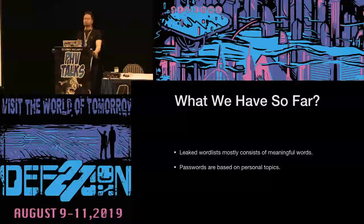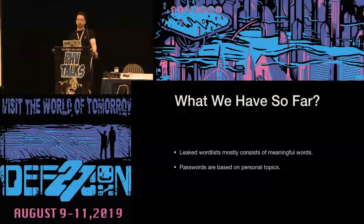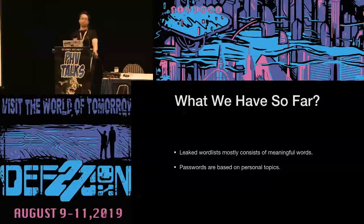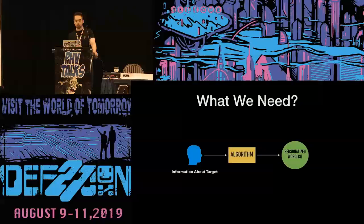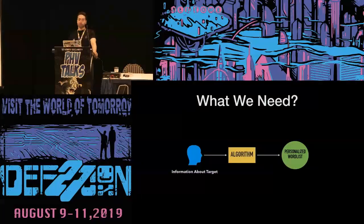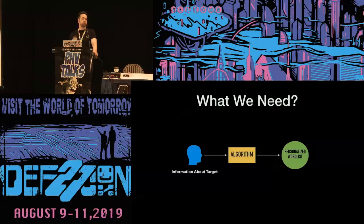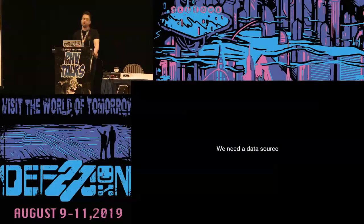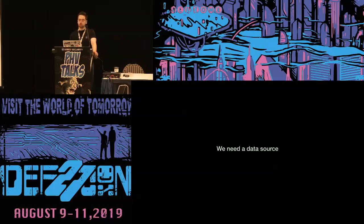Let's recap the facts we have so far. First, our analysis shows that people use meaningful words for their passwords. Second, from research conducted by various universities, we know passwords are mostly based on personal topics. So in theory, Sherlock Holmes' method is legitimate. Can it be done in practice? To achieve this, we need information about the target and an algorithm which extracts good password candidates from that information. We need a data source where we can find hobbies and interest areas of targets — and we all know that source: Twitter.